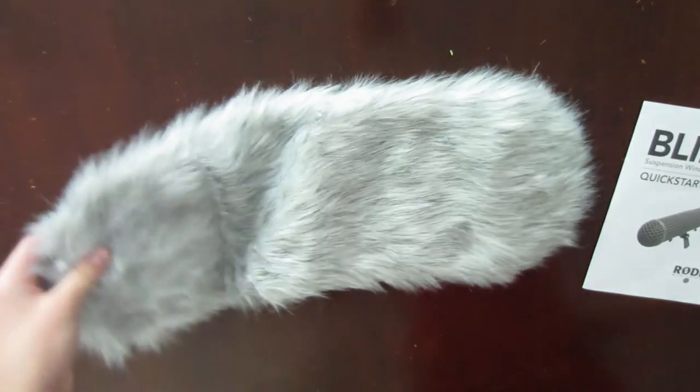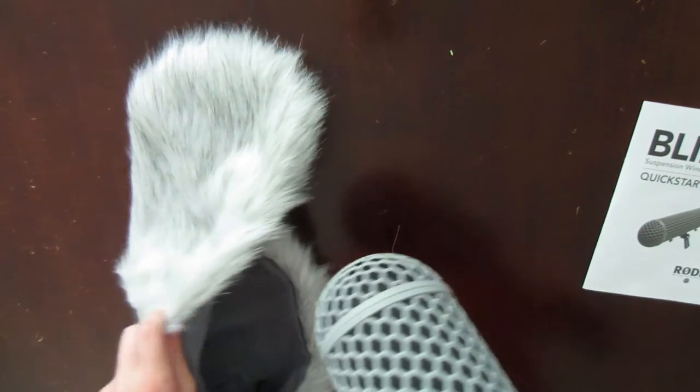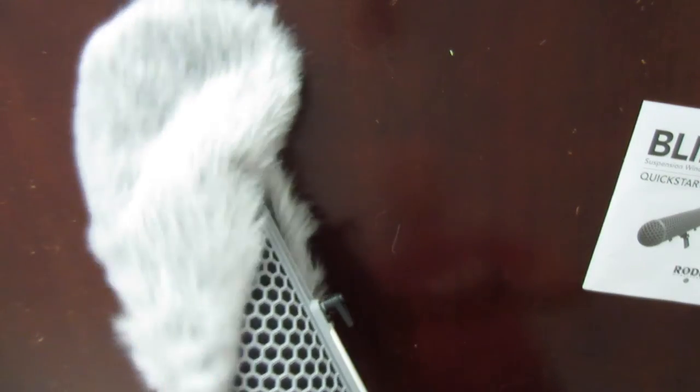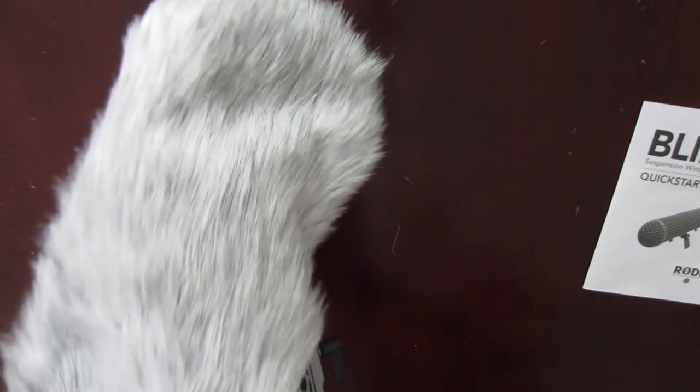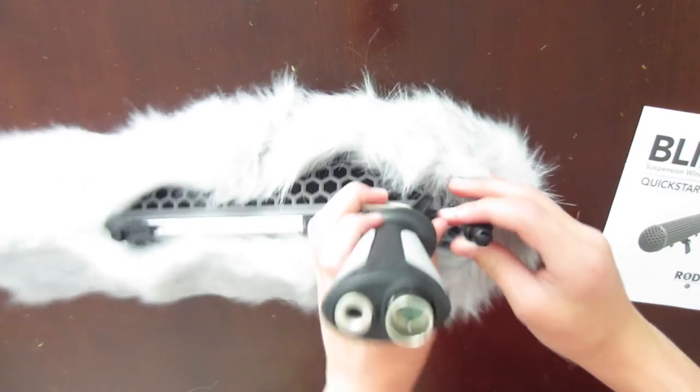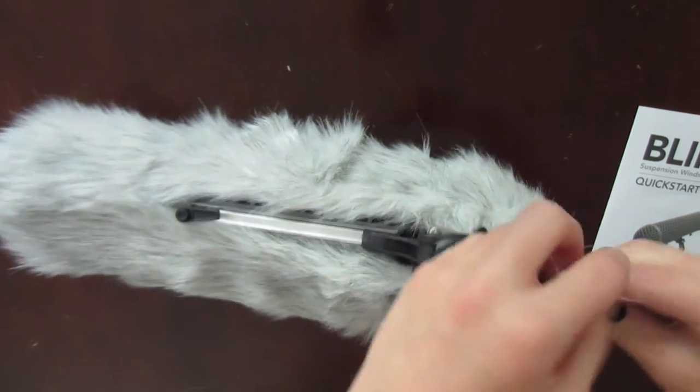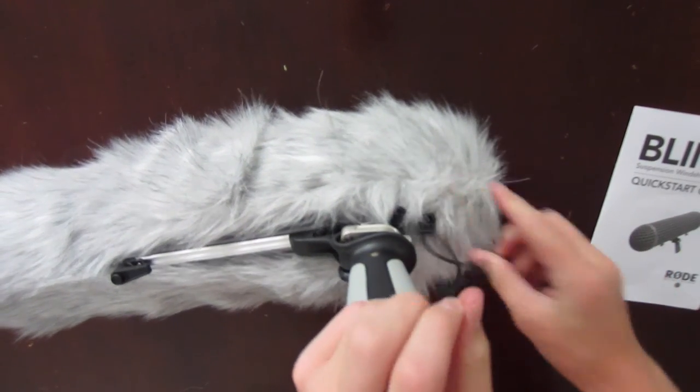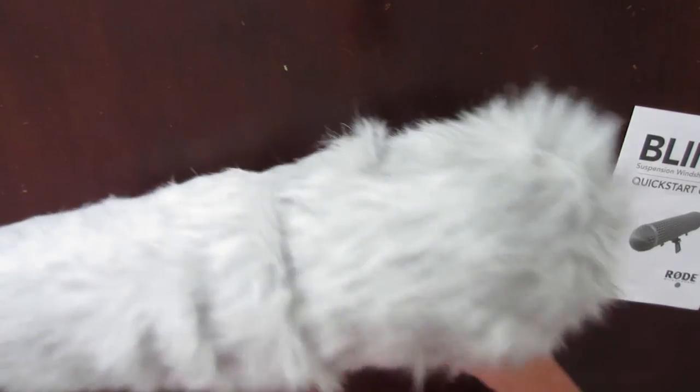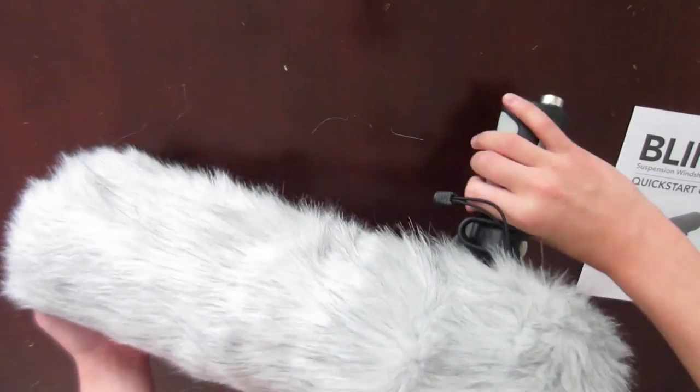Here's the dead wombat. It opens at the bottom for easy sliding onto the mic. Once it's on, I pull it tight and tighten it. Now we have the complete Blimp with the dead wombat.